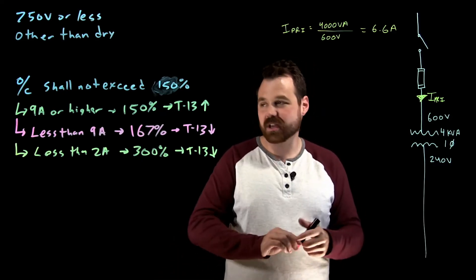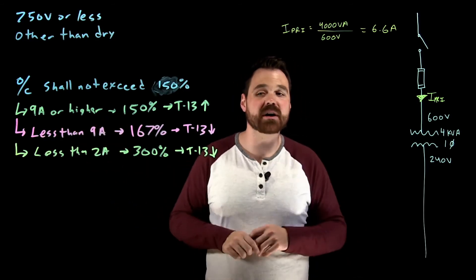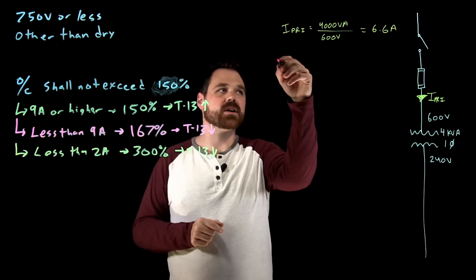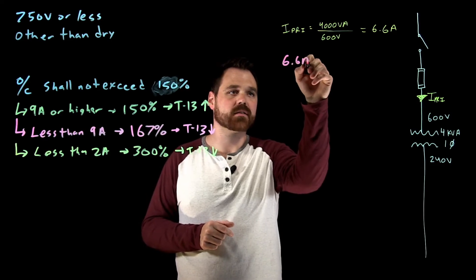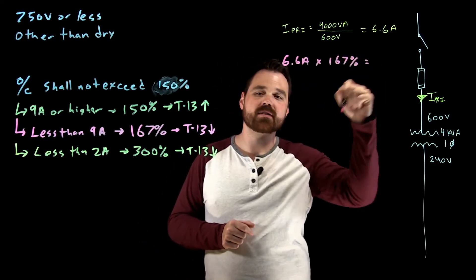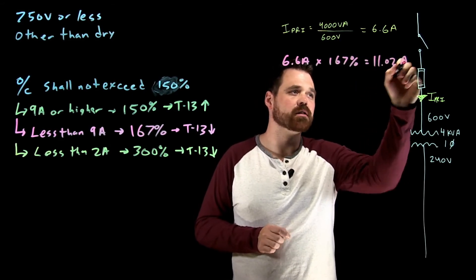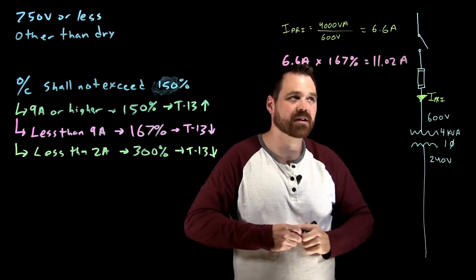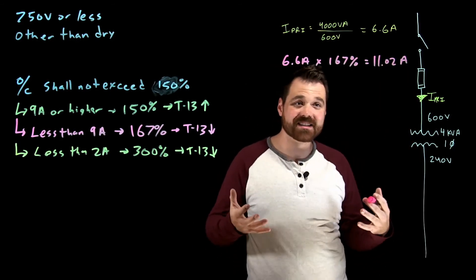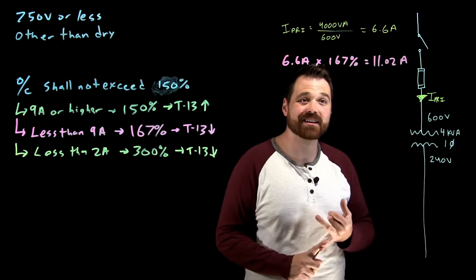So that means I'm less than nine amps, which gives me an option. It tells me you can take your 6.6 amps times it by 167%. In this case, that would give us 11.02 amps. Awesome. From dealing with fuses in that size, there's probably an 11 amp fuse available. So I'm going to take the 11 amp fuse.